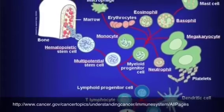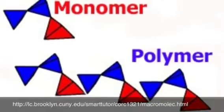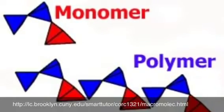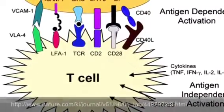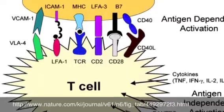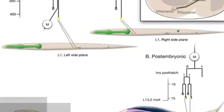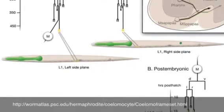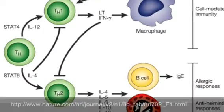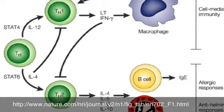Lyse is the destruction of cells and disrupts the cell membrane. A monomer is a molecule that can combine with others of the same kind to form a polymer. A T-independent antigen is an antigen able to trigger B cells to produce antibodies without the presence of T cells. Coelumocytes is a fluid-filled body cavity. A cytokine is a non-antibody protein released by contact of a specific antigen.